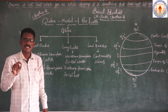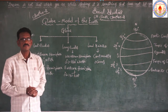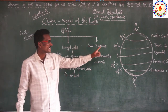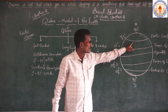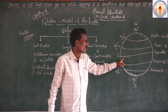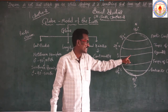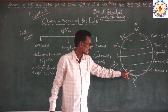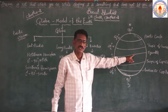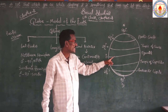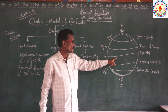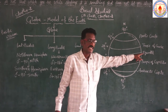Latitudes are imaginary lines which are drawn on the globe. Look at the board — here are pictures. These are horizontal lines drawn on the globe. This is the longest latitude — zero degrees latitude — and it is also called the equator.